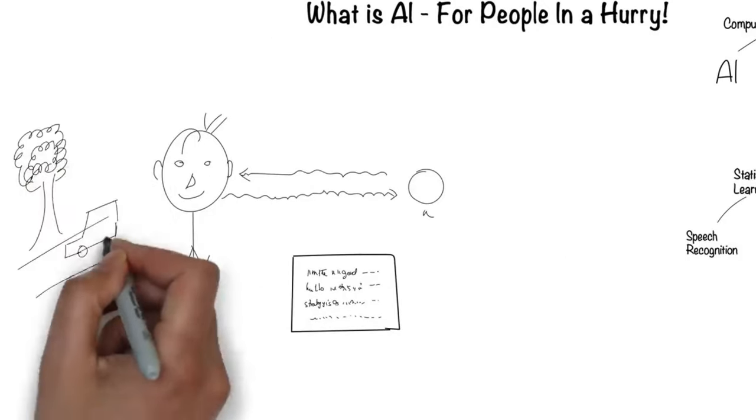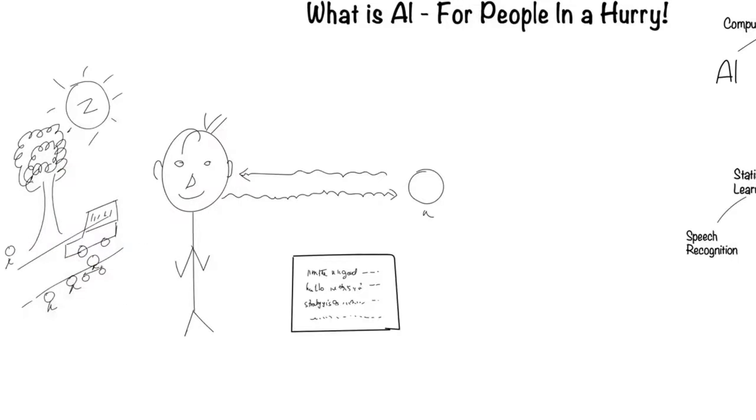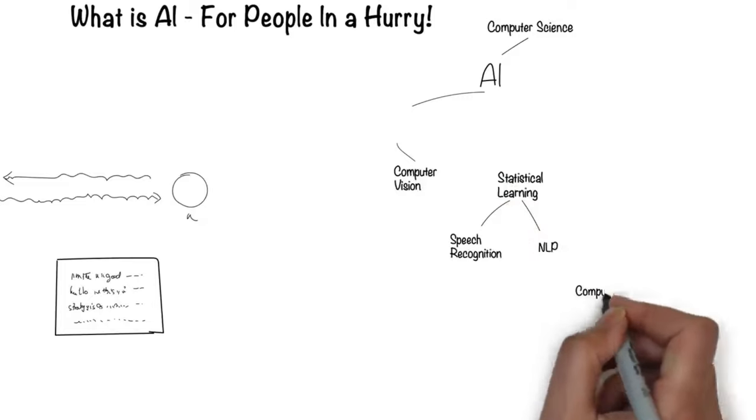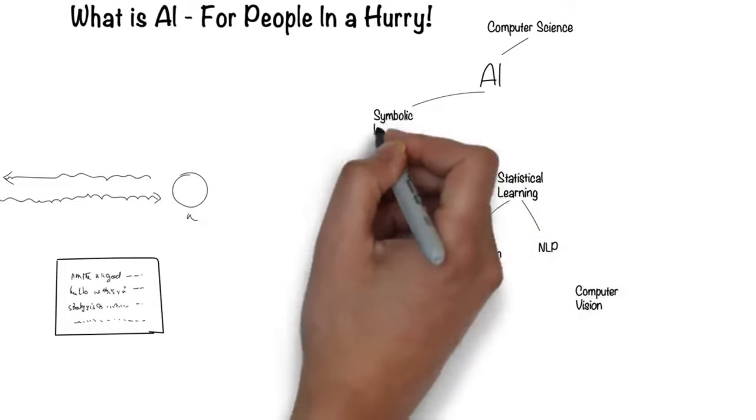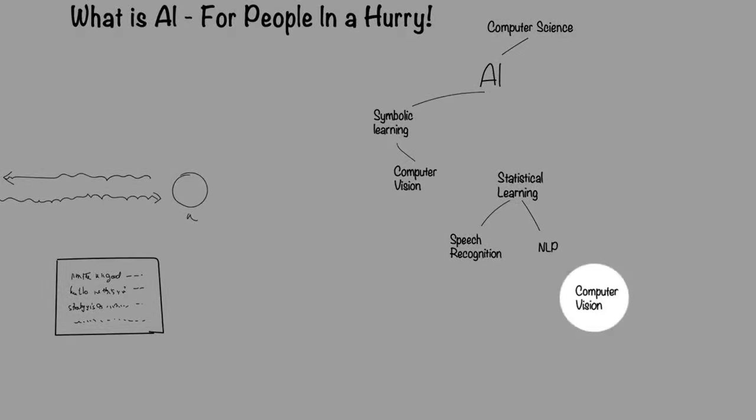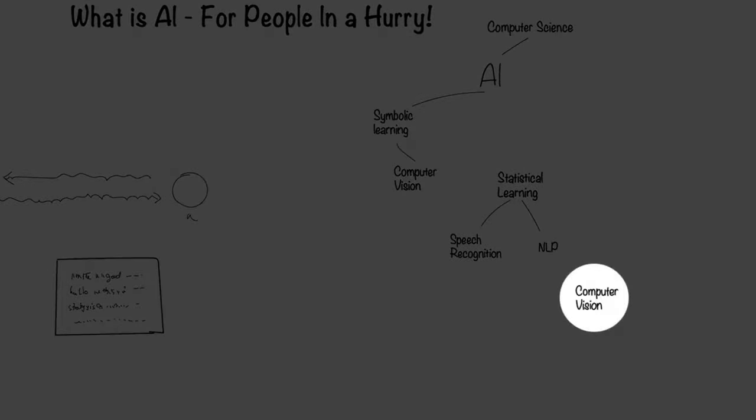Humans can see with their eyes and process what they see. This is the field of computer vision. Computer vision falls under the symbolic way for computers to process information. Recently, there's been another way, which I'll come to later.